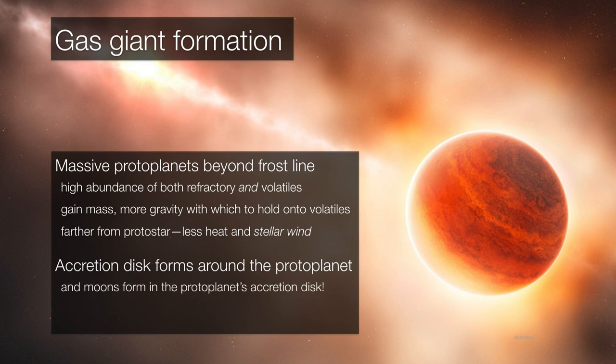And even moons can evolve from inside the proto-planet's own accretion disk. And this allows these massive outer solar system proto-planets to grow what are called their primary atmospheres. And that means that the atmospheres of Jupiter and Saturn, for example, are the same atmospheres that they pretty much formed with.